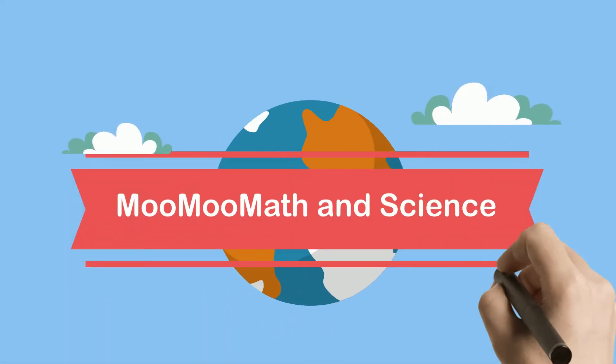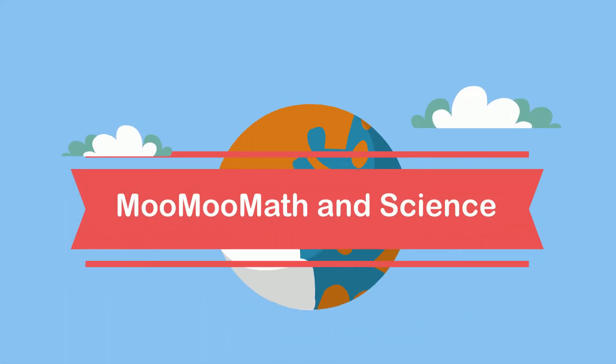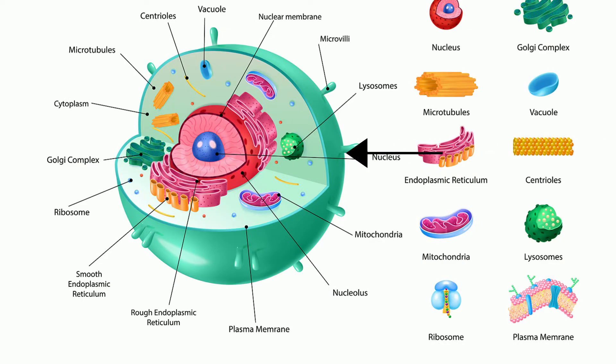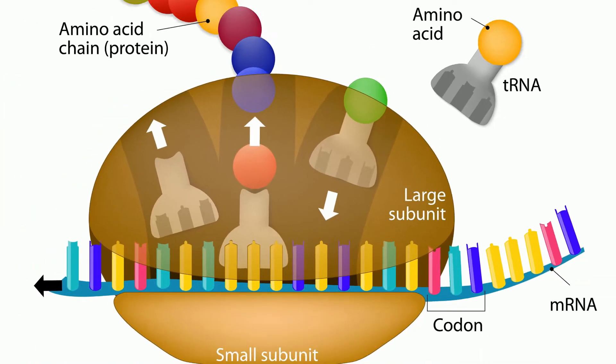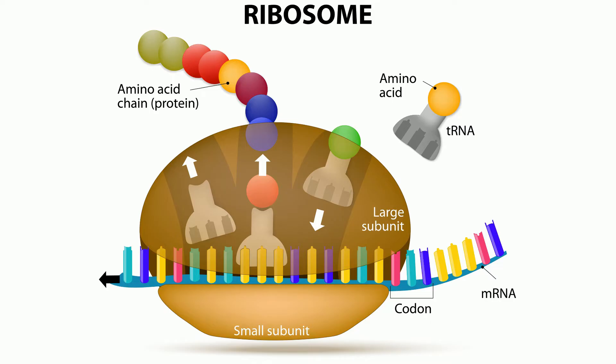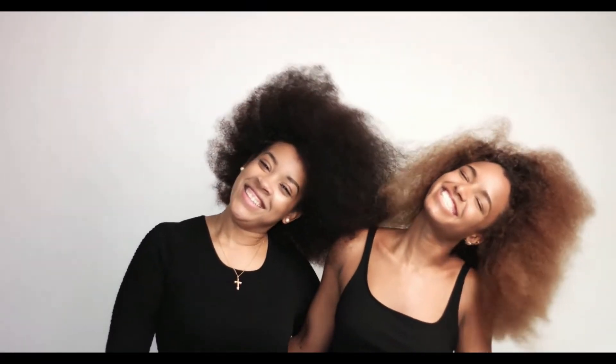Welcome to MooMoo Math and Science and what is a chromosome? Inside the nucleus of a eukaryotic cell is a strand of DNA. The DNA is the genetic blueprint and direction for making proteins. The proteins are responsible for traits such as hair color and eye color.